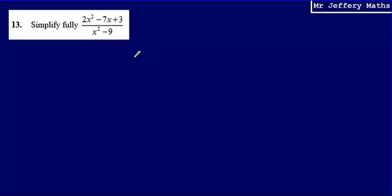This is question 13. Here I'm asked to simplify fully, and I've got an algebraic fraction: 2x squared minus 7x plus 3 over x squared minus 9.